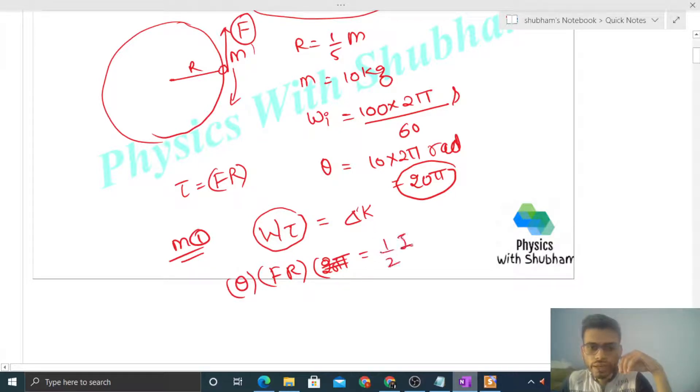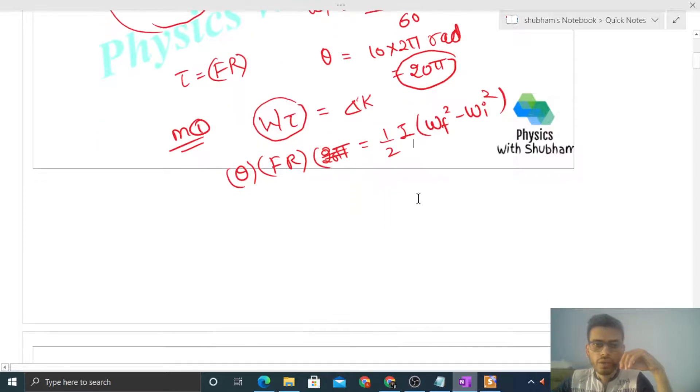That is equal to change in kinetic energy, that is half of I into omega final square minus omega initial square. This is the change in rotational kinetic energy. So here F's value will be I upon 2 theta R times omega final square minus omega initial square. Now I's value, the moment of inertia, is simply mR² by 2.